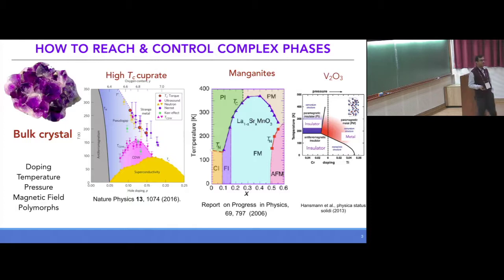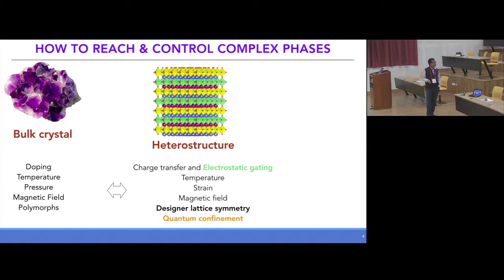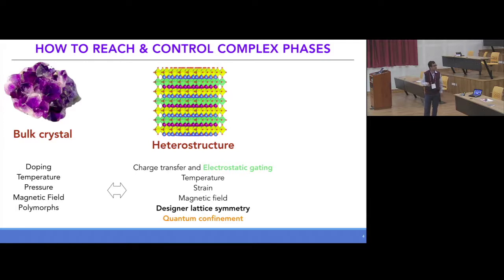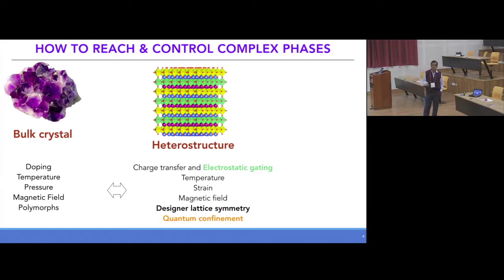With the advancement of thin film technologies, nowadays you can make heterostructures — you can combine two or three different systems into the same system with unit cell precision. When you grow these heterostructures there are different ways to tune the properties: at the interface you can have charge transfer, apply compressive or tensile strain, apply a magnetic field, and also do quantum confinement by controlling the thickness along the C direction, forcing electrons to move only in two dimensions. In this talk, I will focus on how pure structural competition across the interface gives rise to new phenomena.